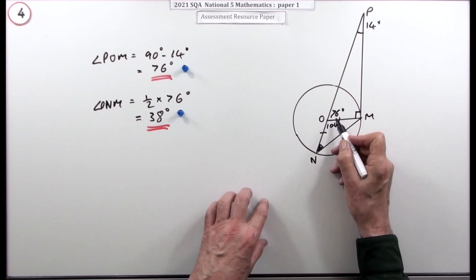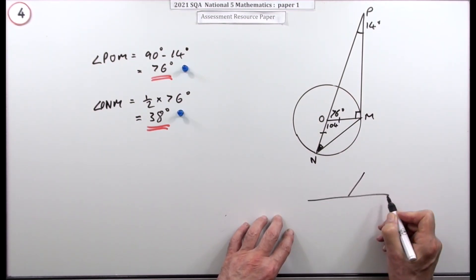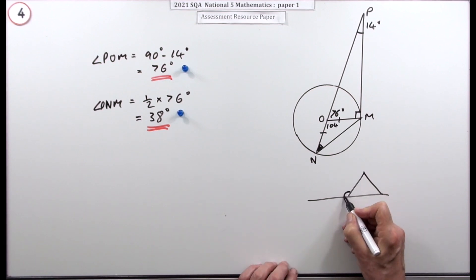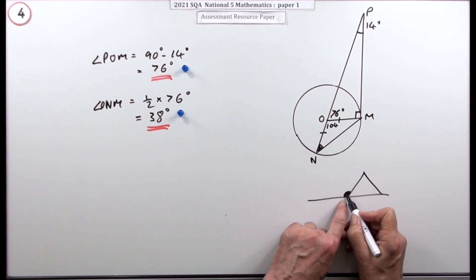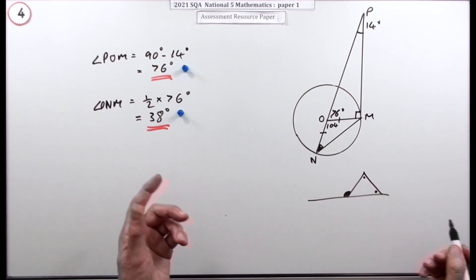Another pattern which would have taken you from 76 to those two is in any triangle, if you draw a line outside a triangle, that's called the external angle. The external angle is equal to the sum of the two opposite angles.